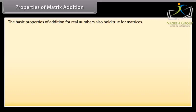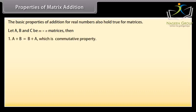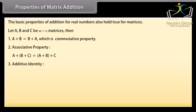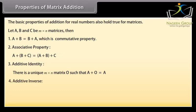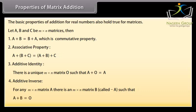Properties of matrix addition. The basic properties of addition for real numbers also hold true for matrices. Let A, B and C be m by n matrices. Then: A plus B equals B plus A (commutative property). Associative property: A plus (B plus C) equals (A plus B) plus C. Additive identity: there is a unique m by n matrix O such that A plus O equals A. Additive inverse: for any m by n matrix A, there is a matrix minus A such that A plus (minus A) equals zero.